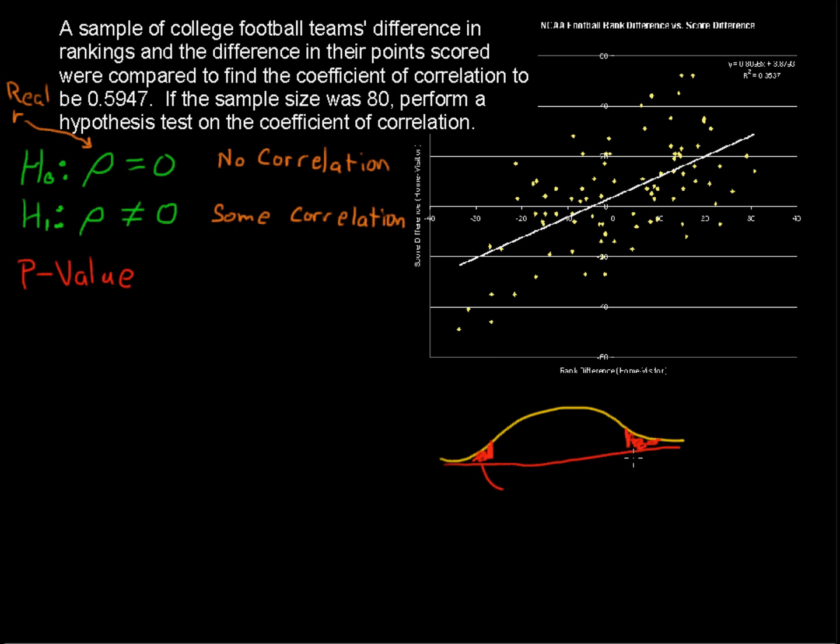And that area is found by finding a t-value and a negative t-value, first of all. And that t-value equals your r, coefficient of correlation,